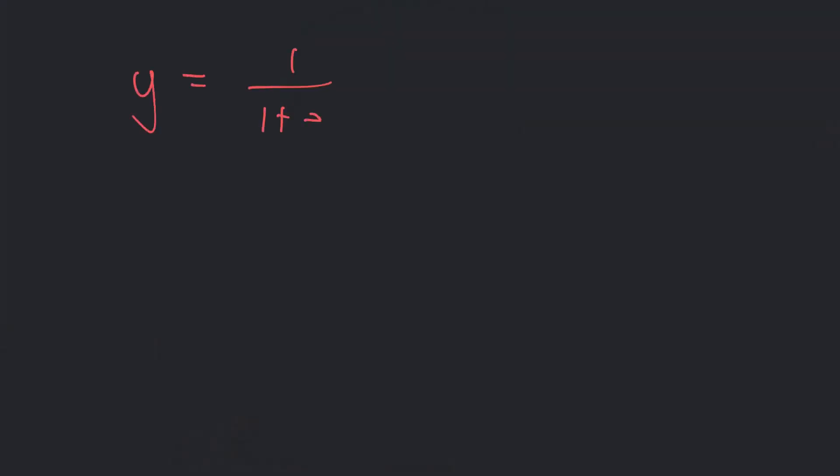For example: y is equal to 1 over 1 plus e to the negative z, where z is beta naught plus beta 1 x1 plus beta 2 x2 up to beta n xn. I just explained to you what logistic regression is. Write that down. I'm trying to teach you the math before telling you what it is actually good for and what it's trying to do.